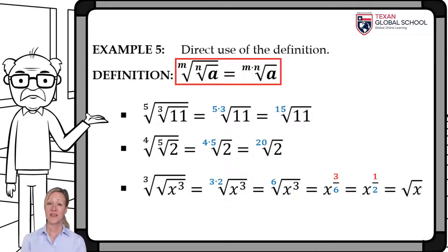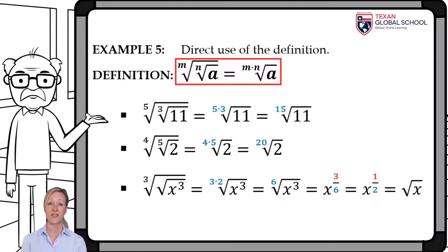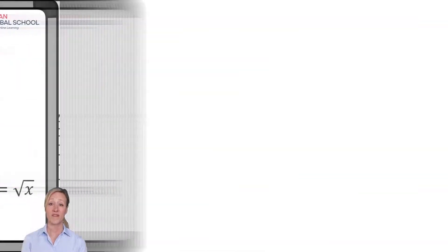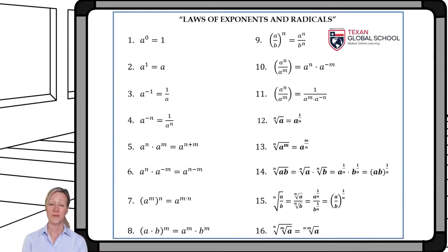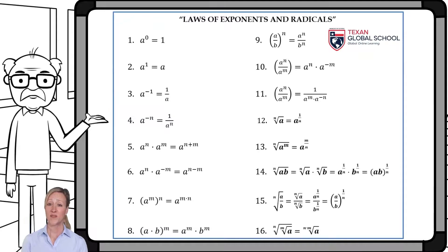In the last example, the sixth root of x cubed can be represented as x to the three-sixths, which, simplifying the fraction, gives x raised to one-half, or the square root of x. We now present the complete set of laws of exponents and radicals to simplify algebraic expressions.